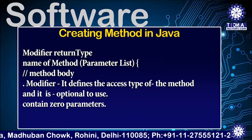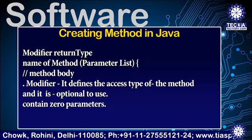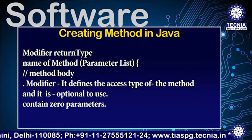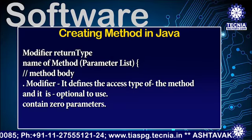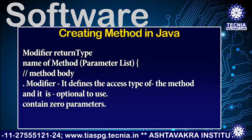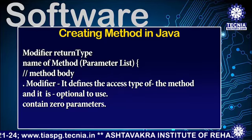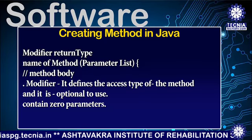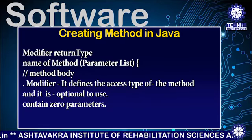Return type: a method may return any value, or it may return void. Name of the method: this is the method name. The method signature consists of the method name and the parameter list. Parameter list: the list of parameters defines the type, order, and number of parameters of a method. These are optional — a method may contain zero parameters.